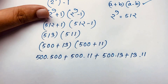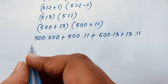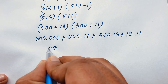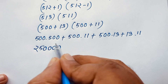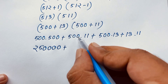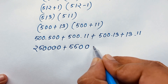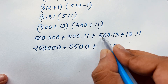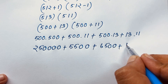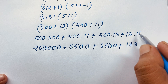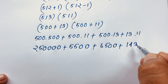Now here is 500 times 500 — how to simplify? It will be 250,000. And 5 times 5 will be 25. Then 500 times 11: 11 times 5 will be 55, so that is 5,500. Then 500 times 13: 5 times 13 will be 65, so that is 6,500. Then 13 times 11 — because 13 times 10 is 130, and 130 plus 13 is 143.